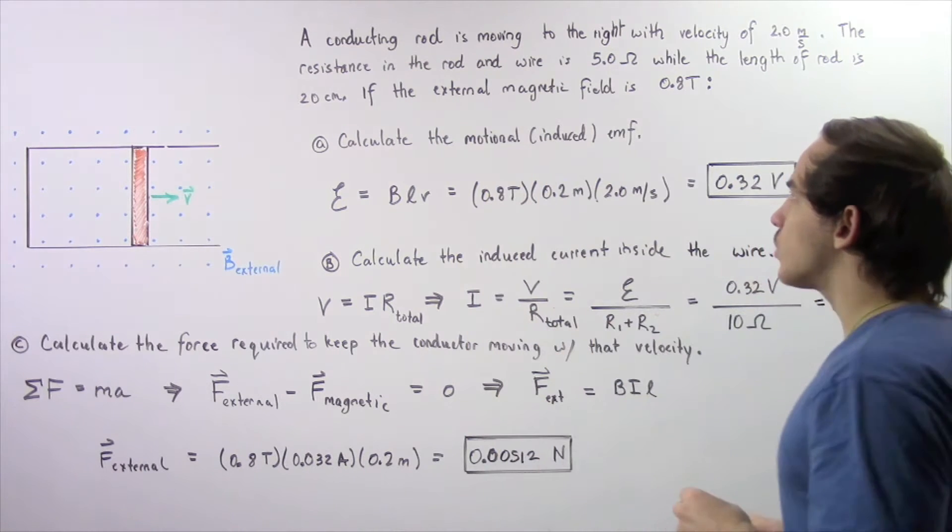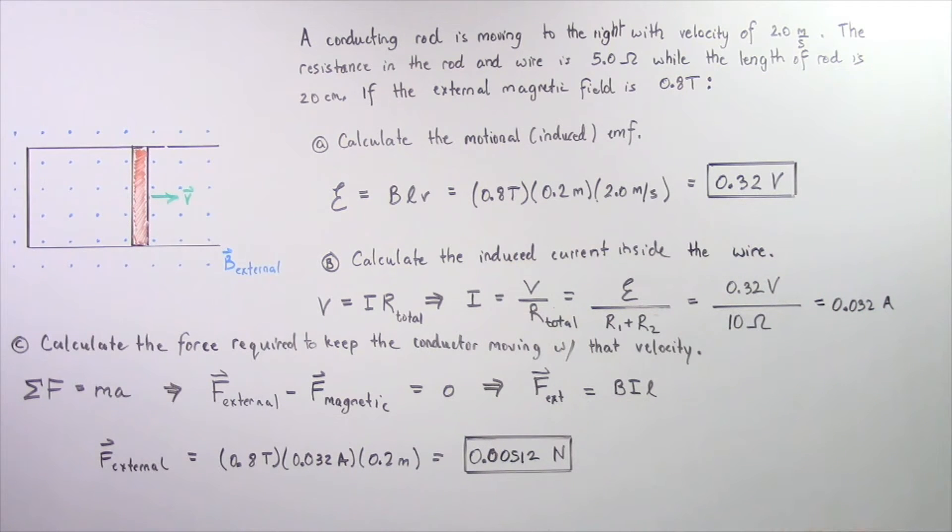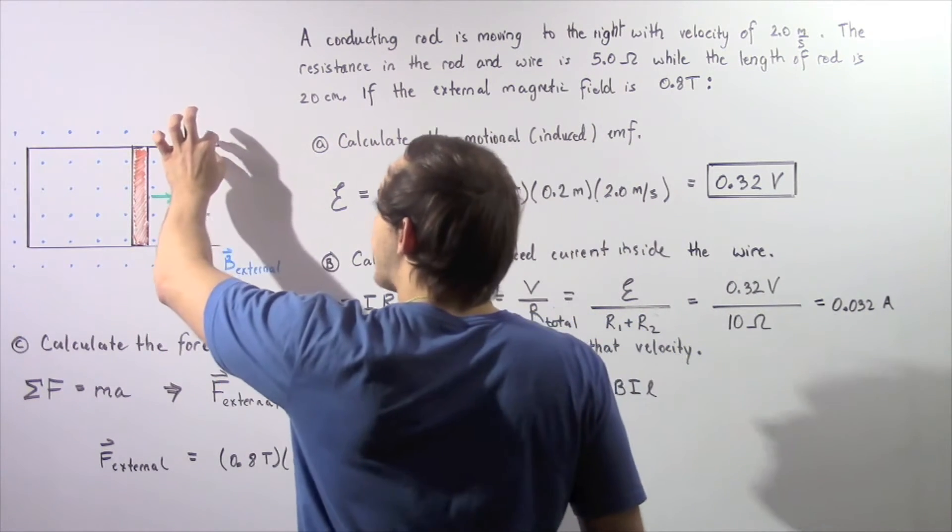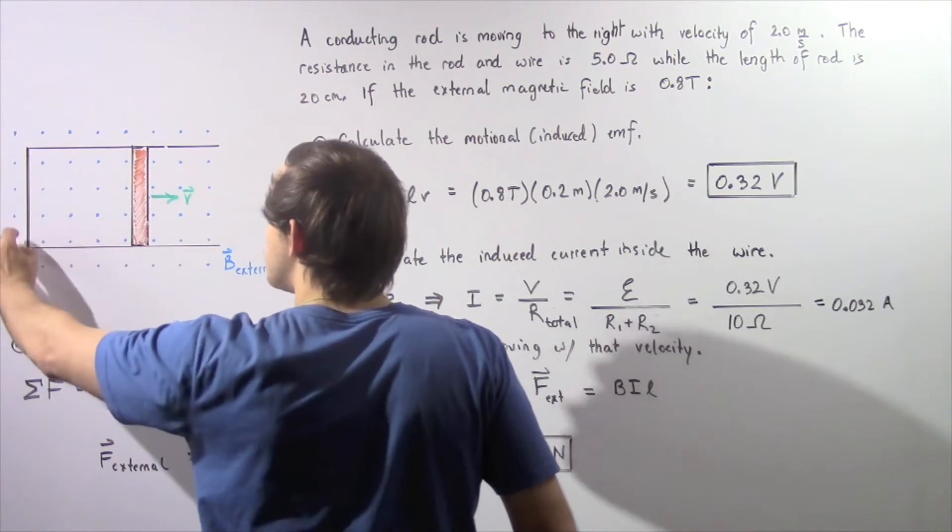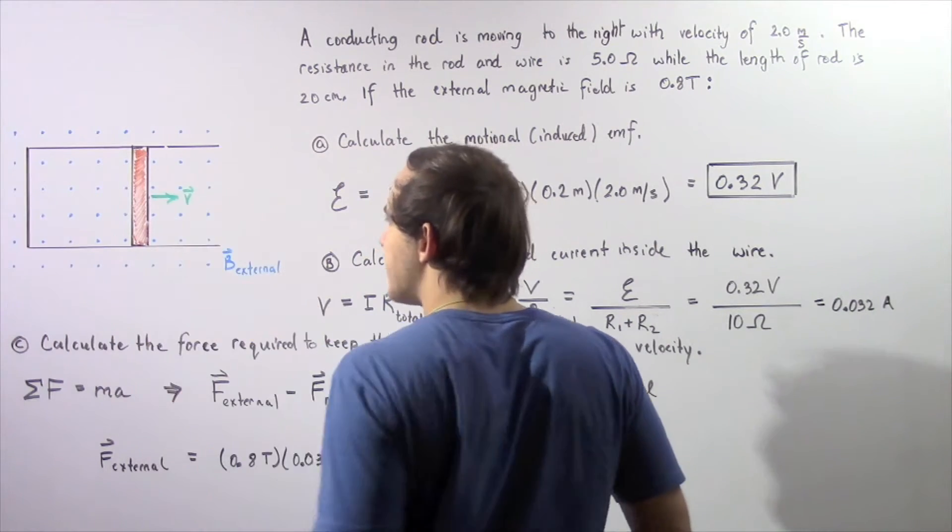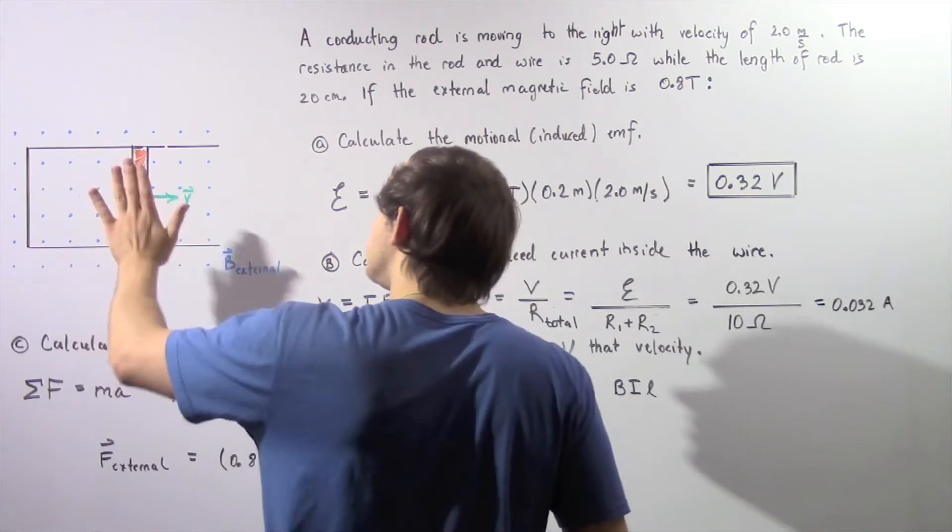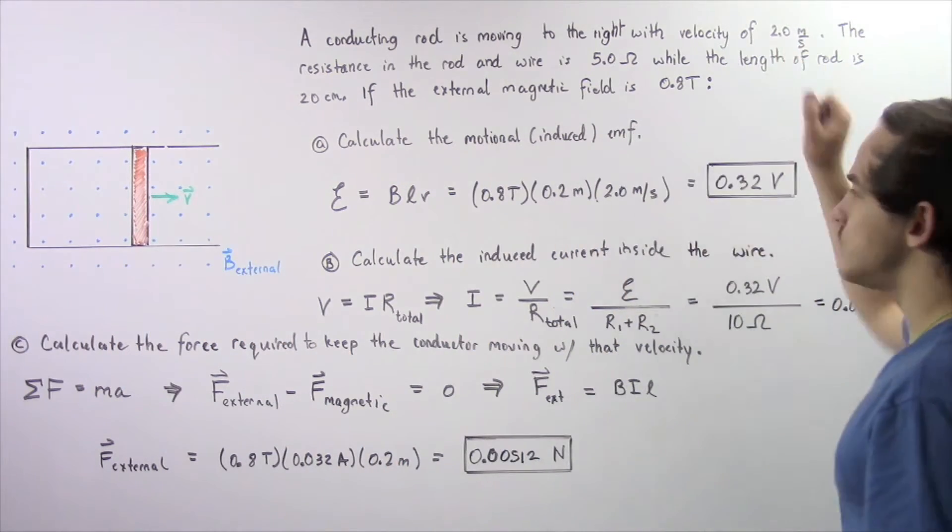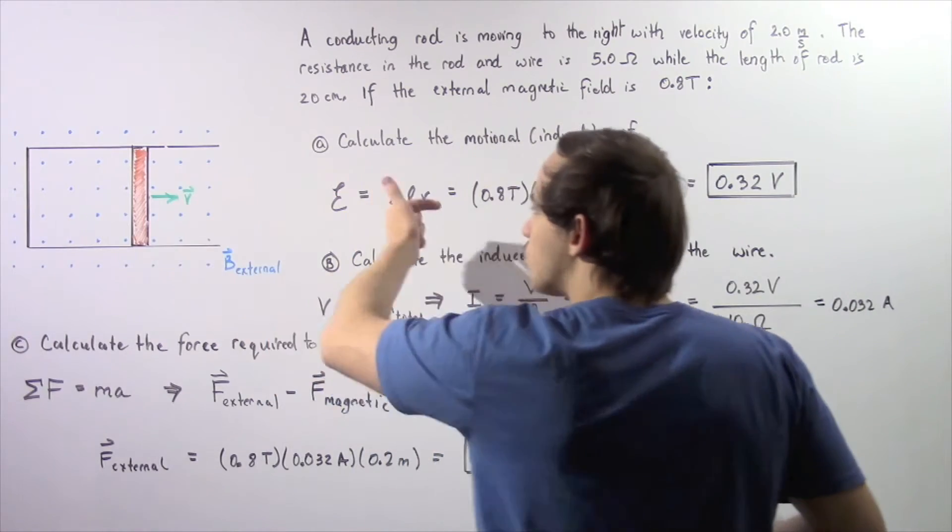A conducting rod is moving to the right with a velocity of 2.0 meters per second as shown in the following diagram. We have our stationary U-shaped wire and we place a conducting rod onto our wire, and then it moves with a velocity of 2 meters per second to the right.